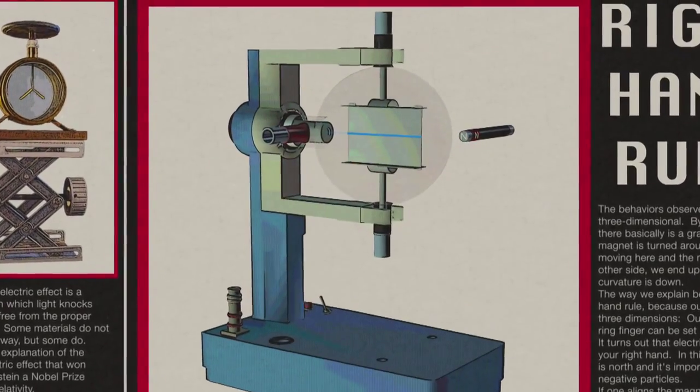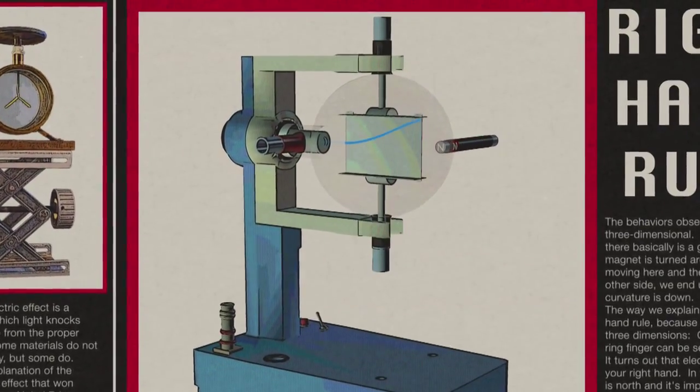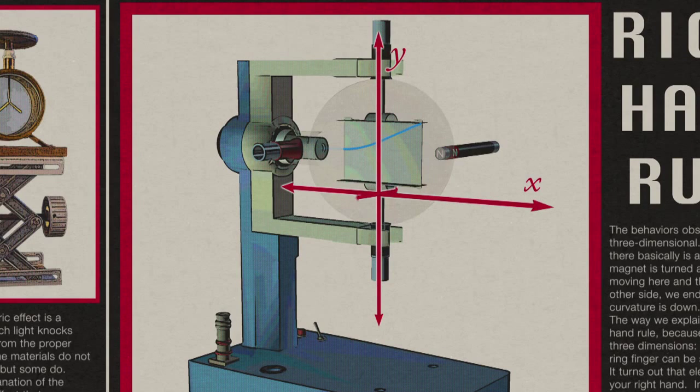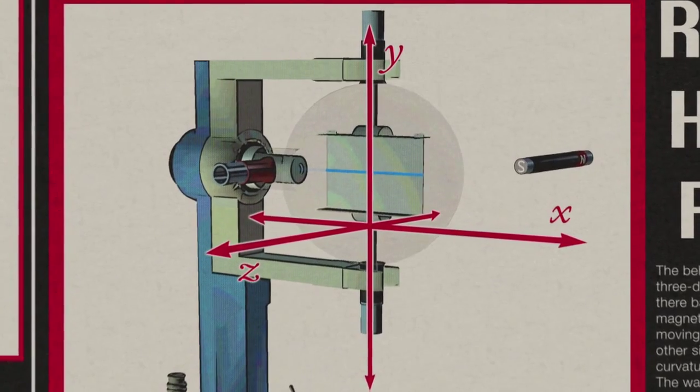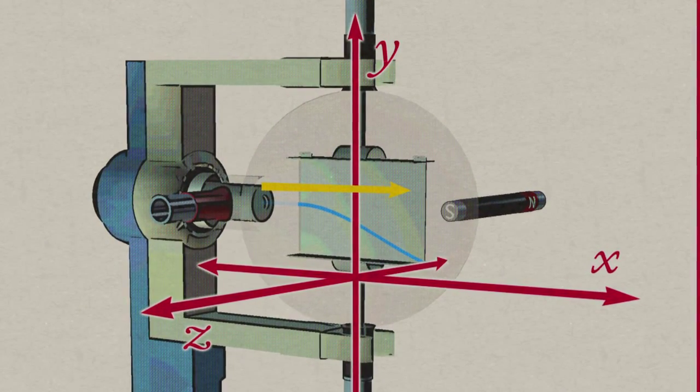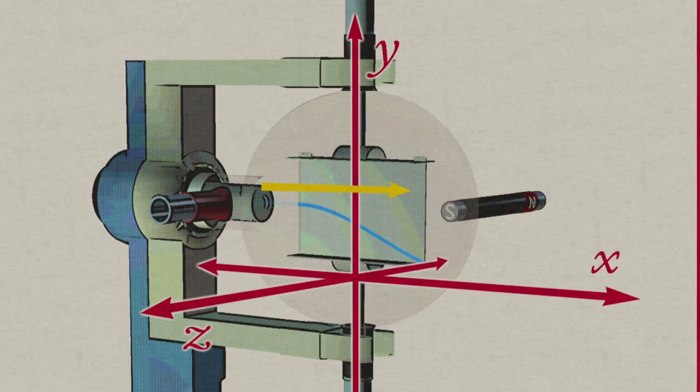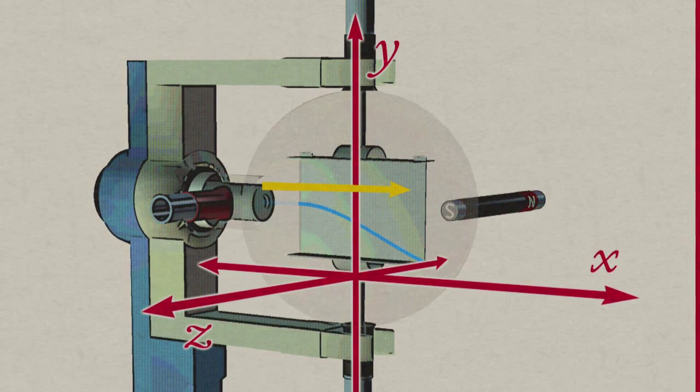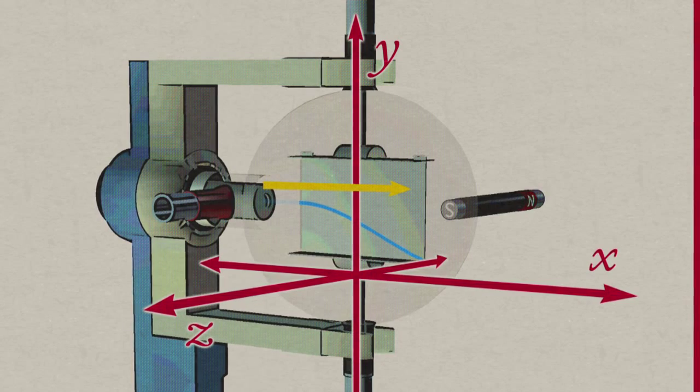By three dimensions, I mean that we've basically got a graph axis with x, y, and z. If we turn it around, we find that if the electrons are moving here and the magnetic field comes in from the other side, we end up with the effect reversed and the curvature is down.